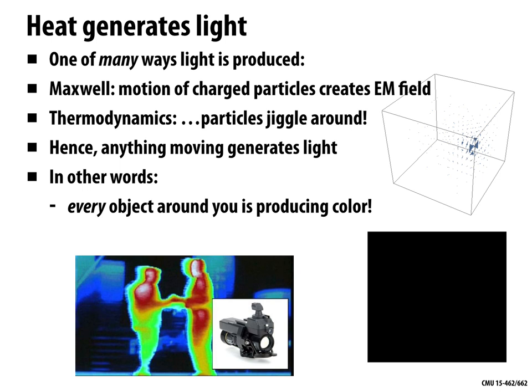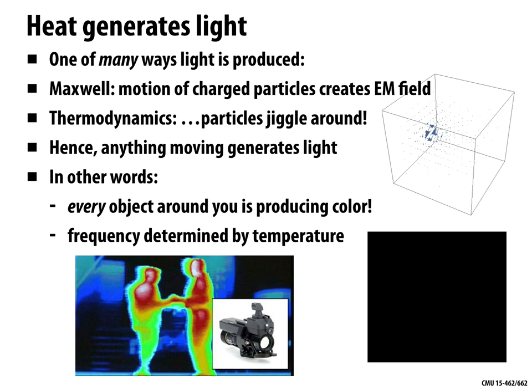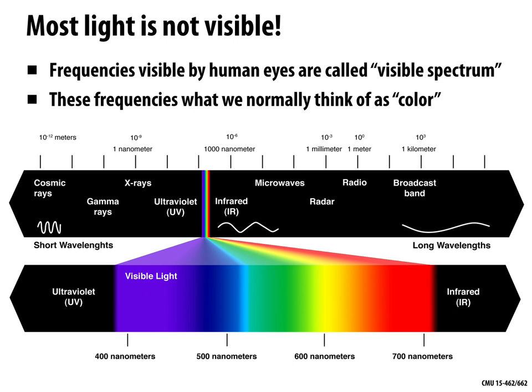In other words, anything that's moving will generate light. That means every object around you in the universe, even if you can't see it, is producing some quantity of light. That light has some color that has to do with how fast those particles are jiggling — how hot or cold it is. Unless something is at absolute zero, it's going to be giving off light. This is why you can build devices that do thermal imaging — seeing somebody through a wall by detecting their thermal signature, the light given off just because their bodies are warm.